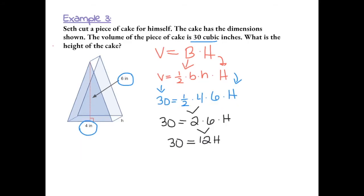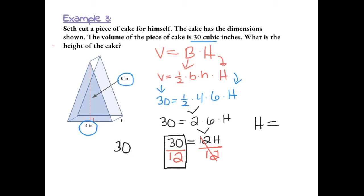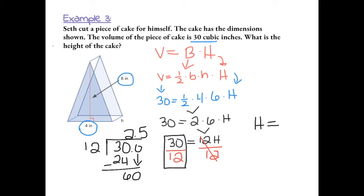To solve for H, we get it by itself using inverse operations. The current operation is multiplication, so we divide both sides by 12. The 12s cancel out, leaving H equals 30 divided by 12. 12 goes into 30 two times, giving 24; we have a remainder of 6, so we add a decimal and a 0. 12 goes into 60 five times, so H equals 2.5 inches.